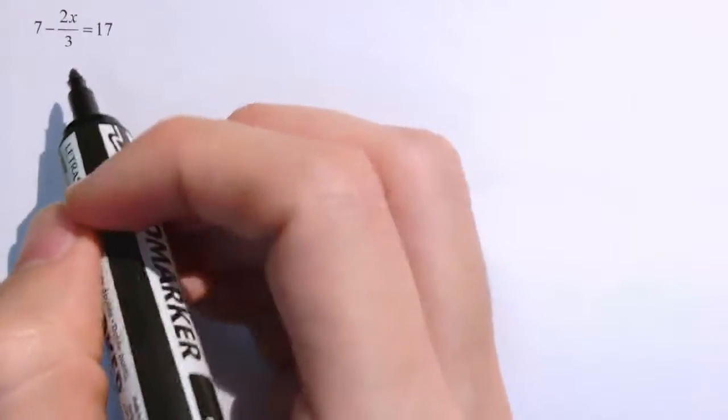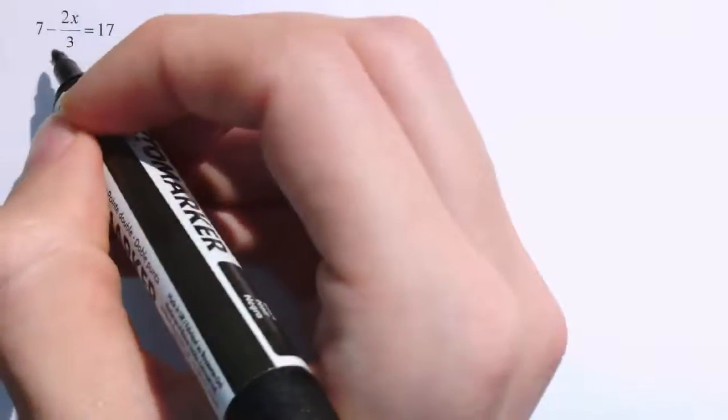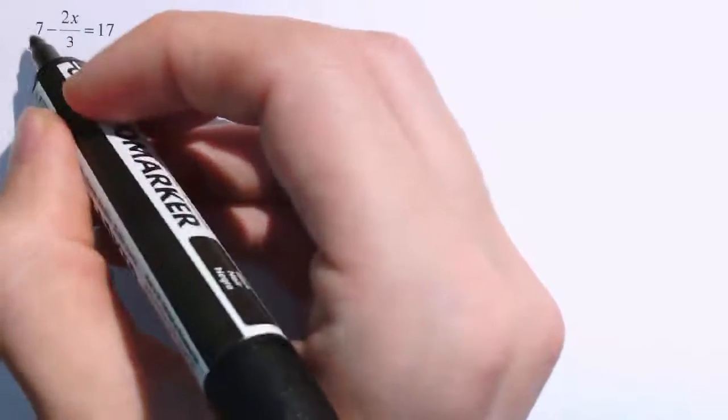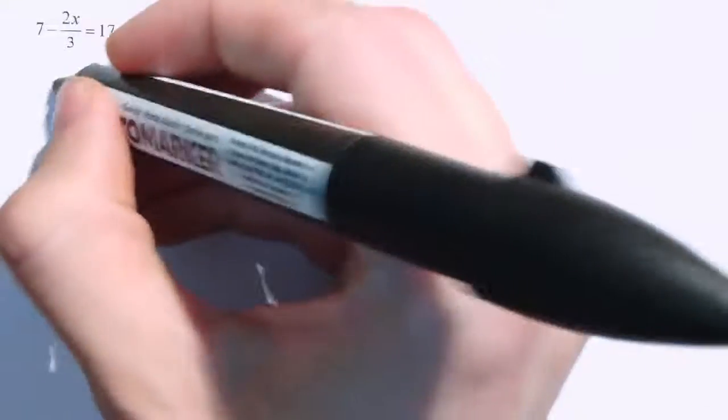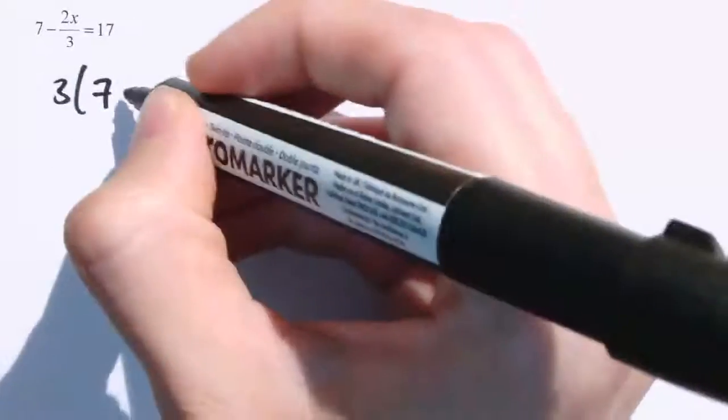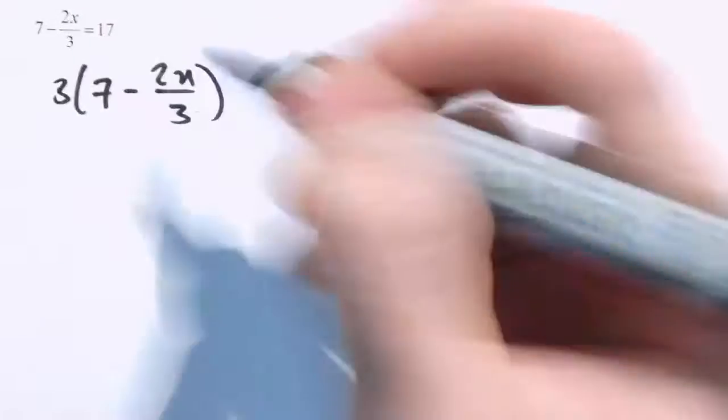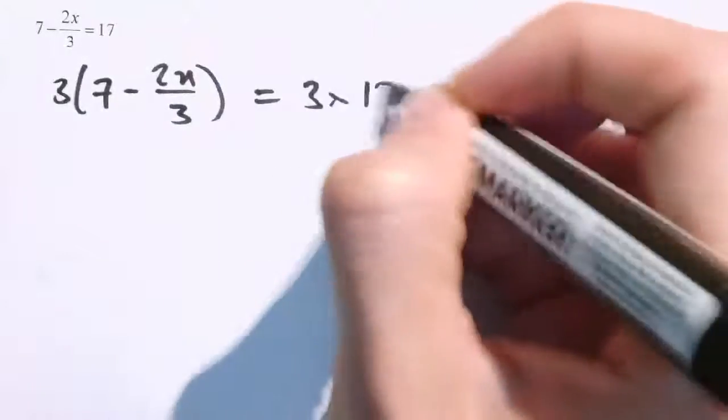In the first example, the only algebraic fraction has just a number in the denominator. Our approach for all of these is to multiply the equation by anything that's in the denominators. So here 3 is in the denominator, so I'm going to multiply the left-hand side by 3. The most important thing is we've got to do it to every single term — 3 times the whole of the left-hand side — and 3 times the right-hand side.